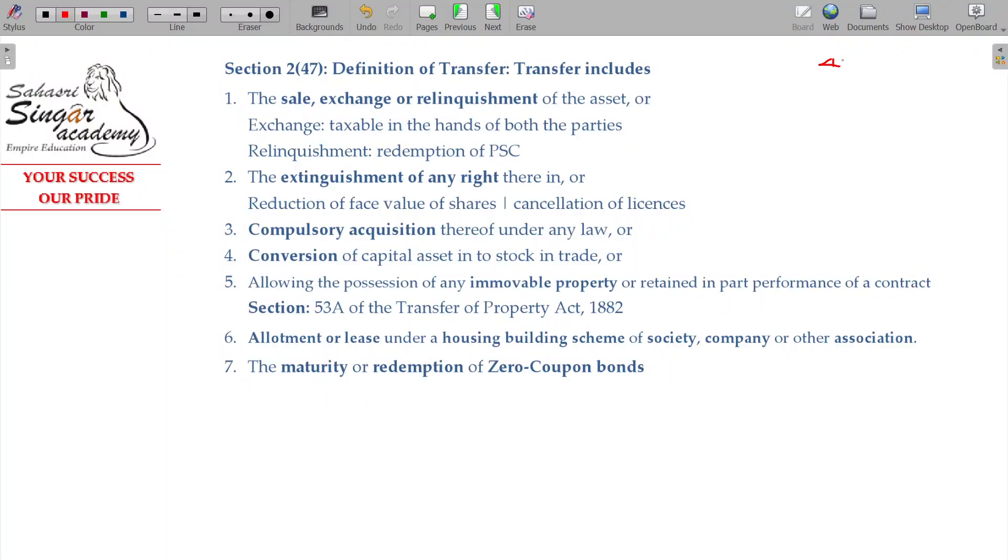So Section 45 Class 1 is all about the charging section under capital gains. Capital gains is taxable if certain conditions are satisfied: there must be a capital asset, a transfer must occur, it must take place in the previous year, and there must be profit or loss. If these four conditions are satisfied, it is going to be taxable under this head.